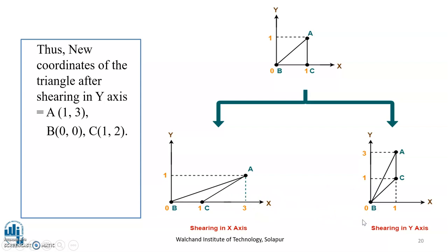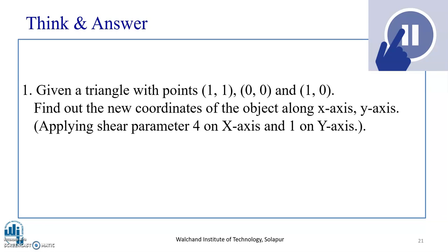I hope you have understood the concept of two-dimensional shearing in x axis and y axis, how to represent a shearing matrix in normal form and also in homogeneous form, and how to apply the matrix equation to a given graphics primitive. I request students to pause the video and solve the following problem: given a triangle with points (1,1), (0,0), and (1,0), find the new coordinates along x and y axes applying shear parameter 4 on the x axis and 1 on the y axis.